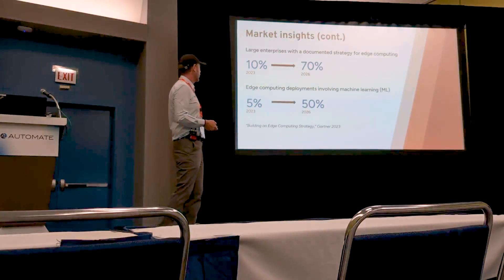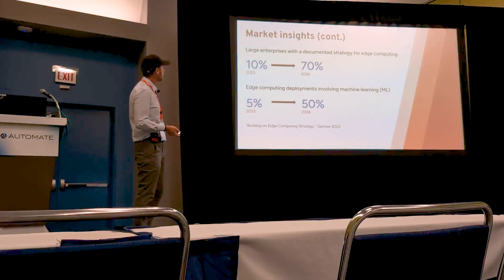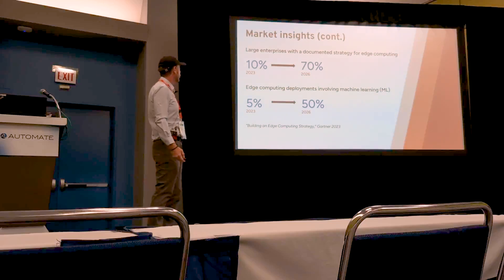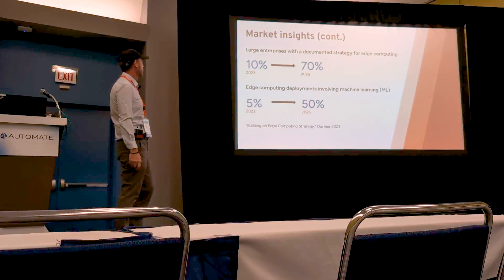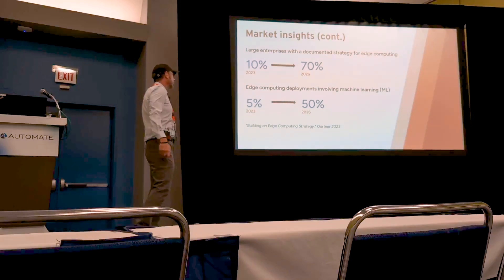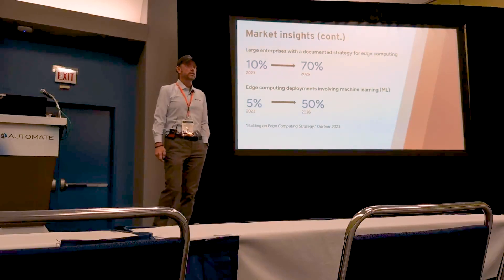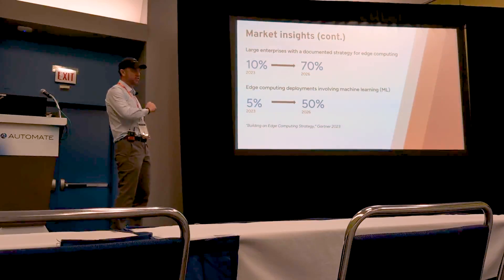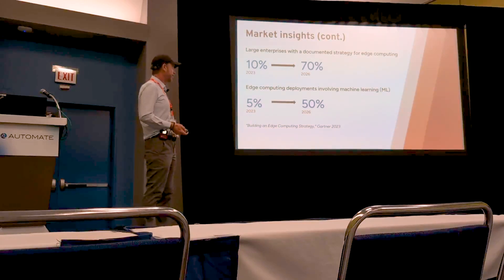Some predictions from Gartner: right now about 10% of large enterprises have an edge computing strategy, but that's projected to reach 70%. About half of companies plan to deploy some kind of machine learning solution. I think that's realistic — not too far-fetched. I've seen some problems with enterprises where it's really, really interesting work. I'm proud to be part of this.